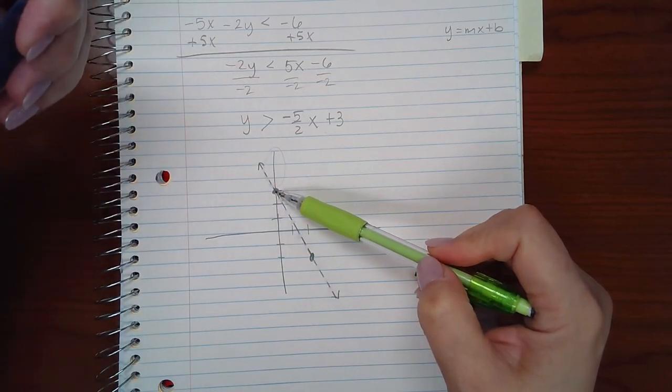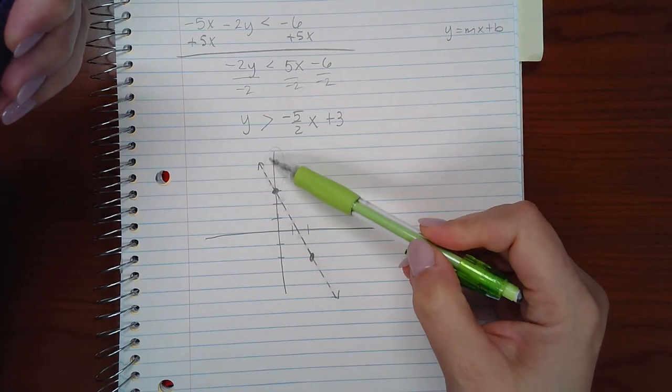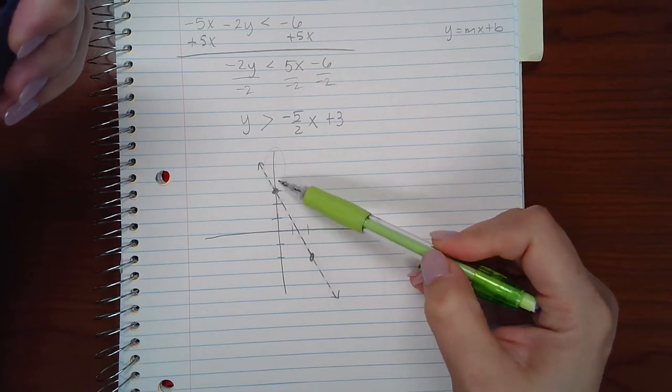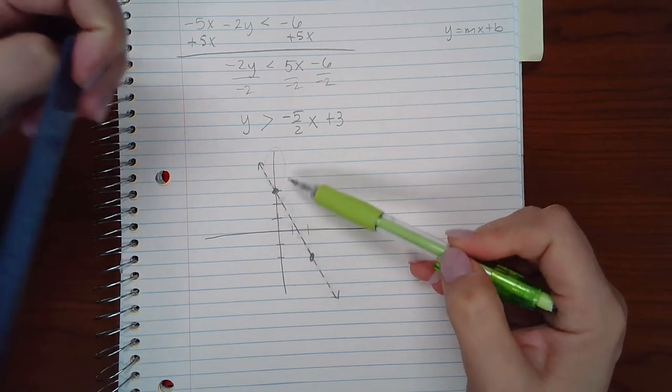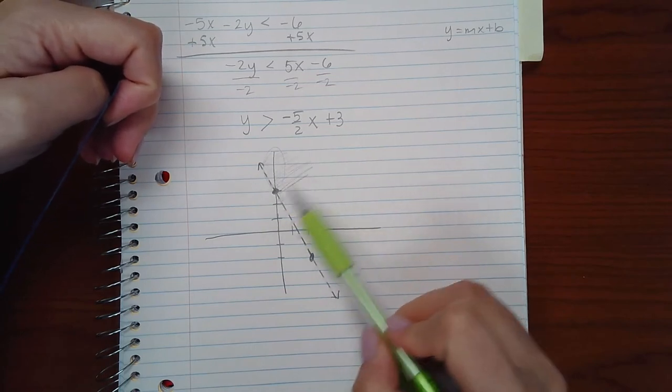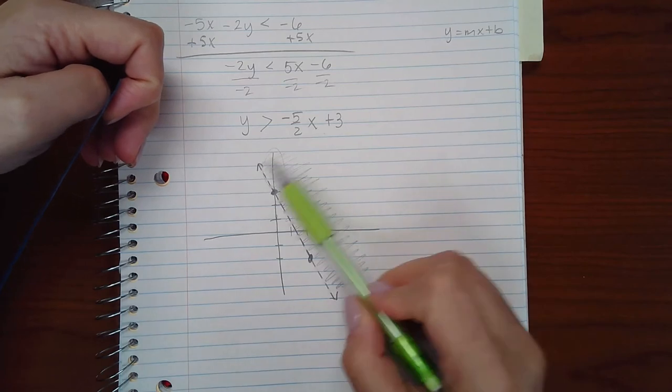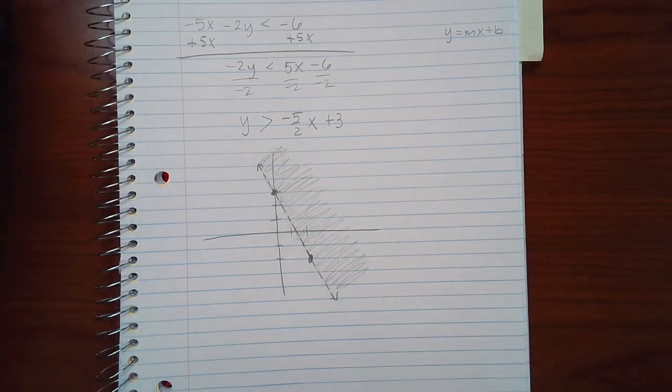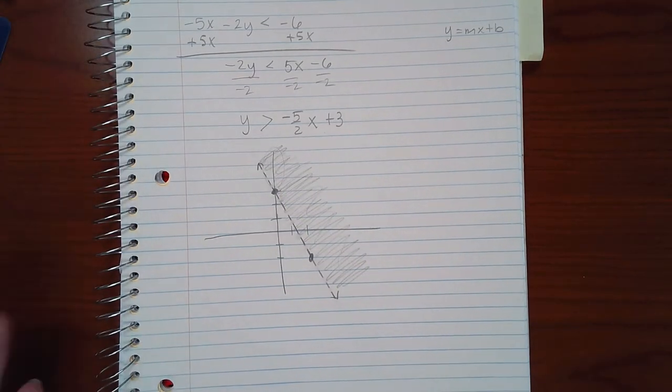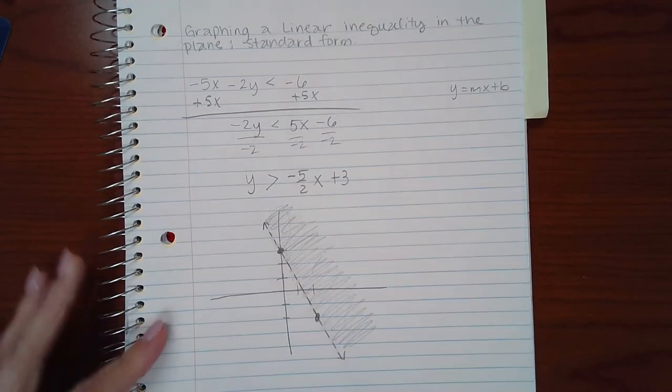Then I need to be shading where the y values are bigger. This is where I touch the y-axis, but these values have bigger y values than those down here. So this is the side that I'm going to end up shading. And that is how you graph any linear inequality.